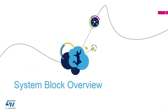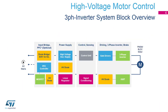System block overview. On the left side of this system block overview we see the AC mains input. It can be single-phase or three-phase. The AC mains voltage needs to be rectified into DC voltage using a diode bridge. In case of in-rush current limitation, an SCR or TRIAC could be found.